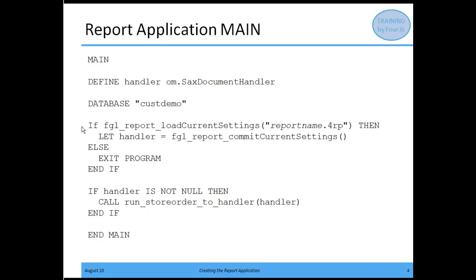The next part says: if I can find a report name .4rp file, I'm going to load that information into the current settings. The FGL_REPORT_LOAD_CURRENT_SETTINGS is a reporting API function provided as part of the Genero report writer library. Next, if I'm able to load the current settings, I'm going to commit those current settings by using another reporting API — FGL_REPORT_COMMIT_CURRENT_SETTINGS. Otherwise, I exit the program.